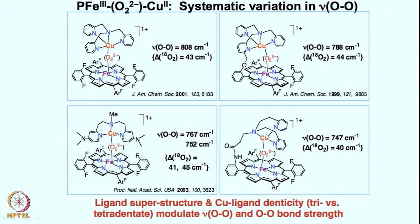Similarly, a peroxo species formation between iron and copper is observed when it is tethered — attached together. Whether attached or not attached to the porphyrin moiety, the resonance Raman data remains similar; the delta O-18 shift also remains similar. All these are consistent with stepwise reduction happening — iron gives one electron first, then copper gives another. Ligand superstructure and copper ligand denticity (tridentate versus tetradentate) modulate the oxygen-oxygen frequency as well as their bond strength.